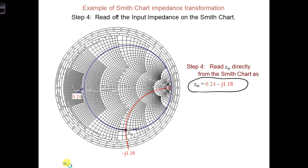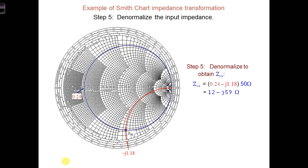And then the last step, step five, we have to denormalize. So we'd multiply—since we're dividing to normalize, we would multiply by Z_0 to denormalize. And then you get your final actual values in real life for Z_in, which is 12 minus j59 ohms.